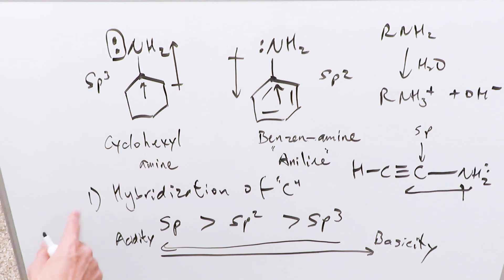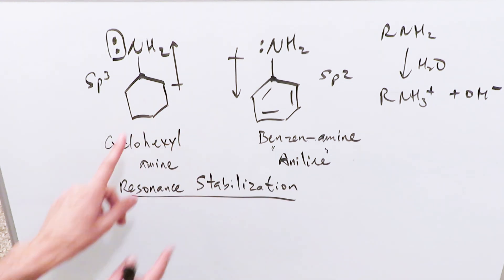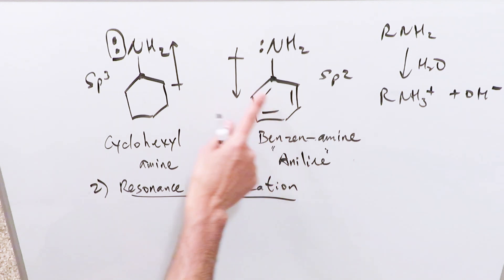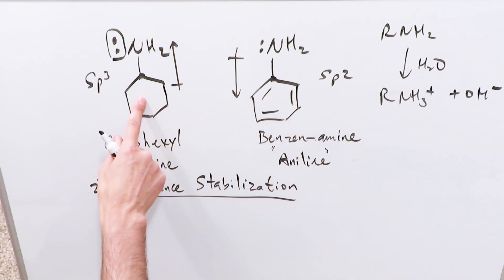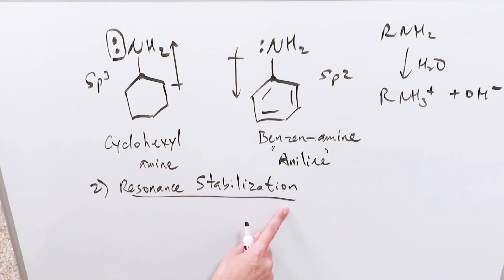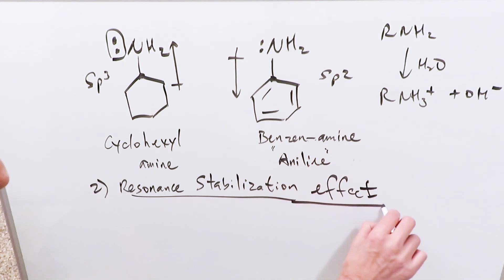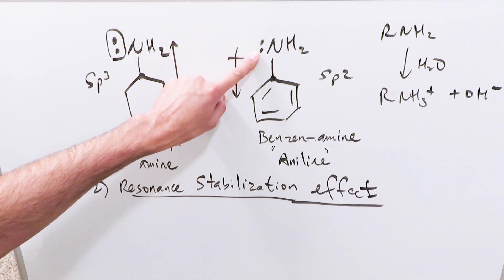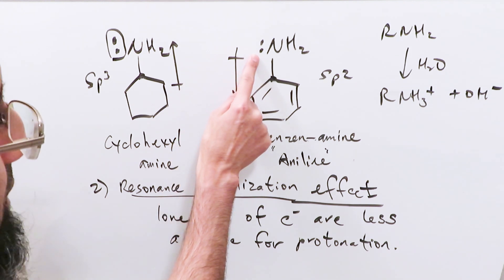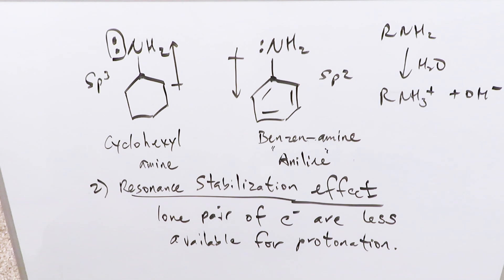That's point number one. Point number two: look at the difference between these two molecules. In cyclohexane you have no pi system, but in benzene you have sp2 hybridized carbons and pi clouds of electrons. You can have resonance stabilization in benzeneamine — you don't have that in cyclohexylamine. You can have delocalization of electrons in benzeneamine, but not in cyclohexylamine. When you have resonance stabilization, you lose the ability to make your lone pair of electrons available for protonation, meaning it will be less basic.